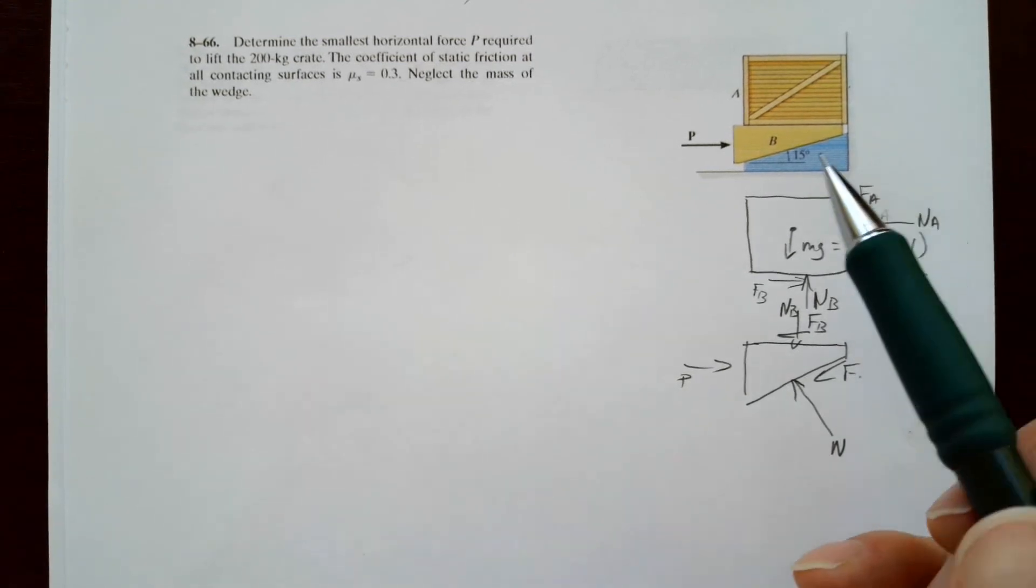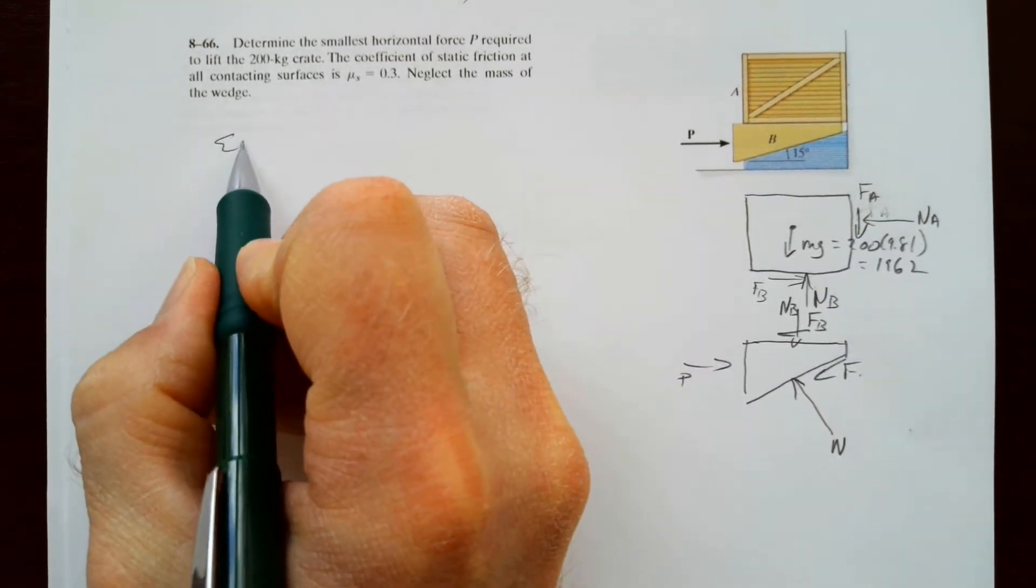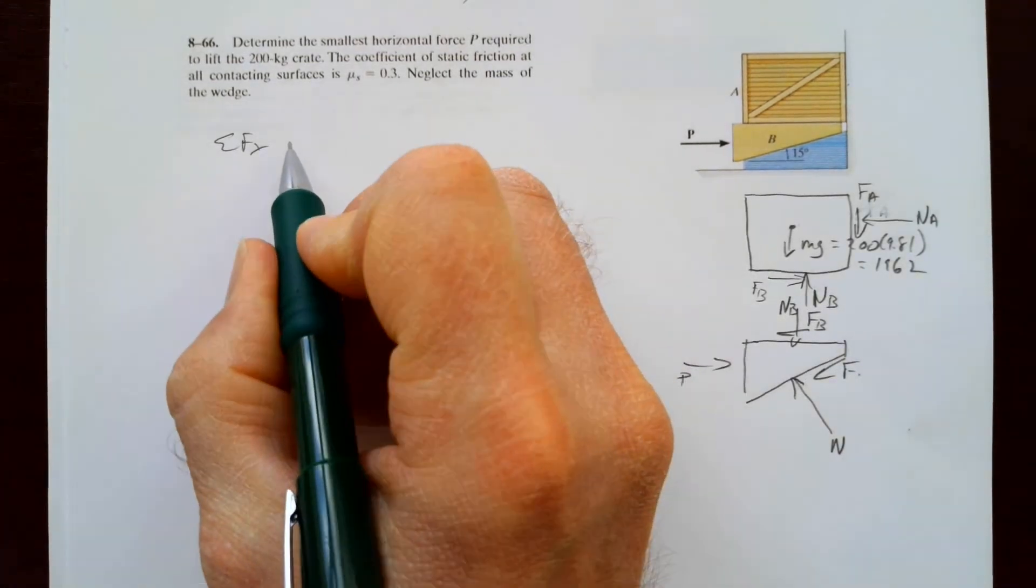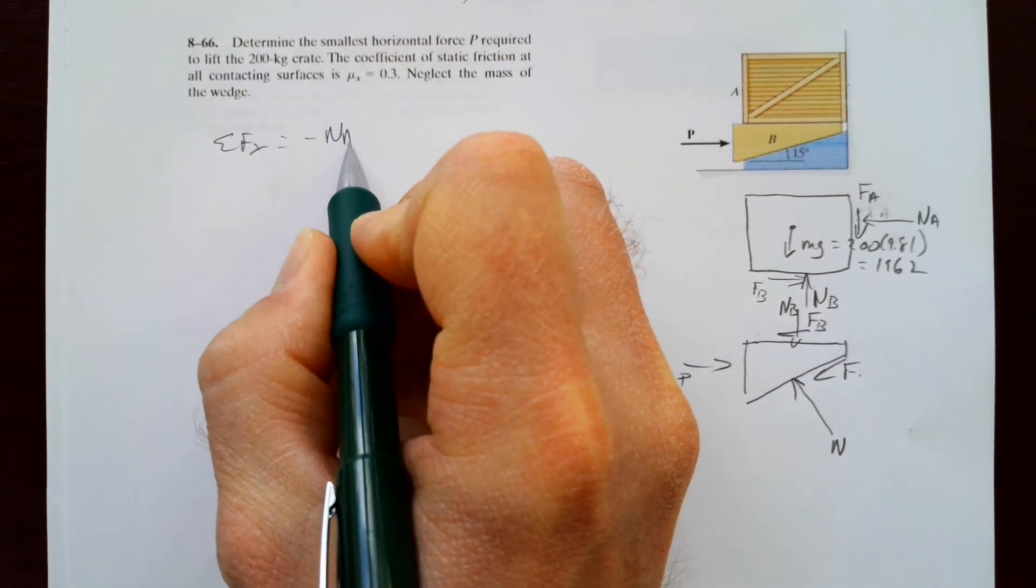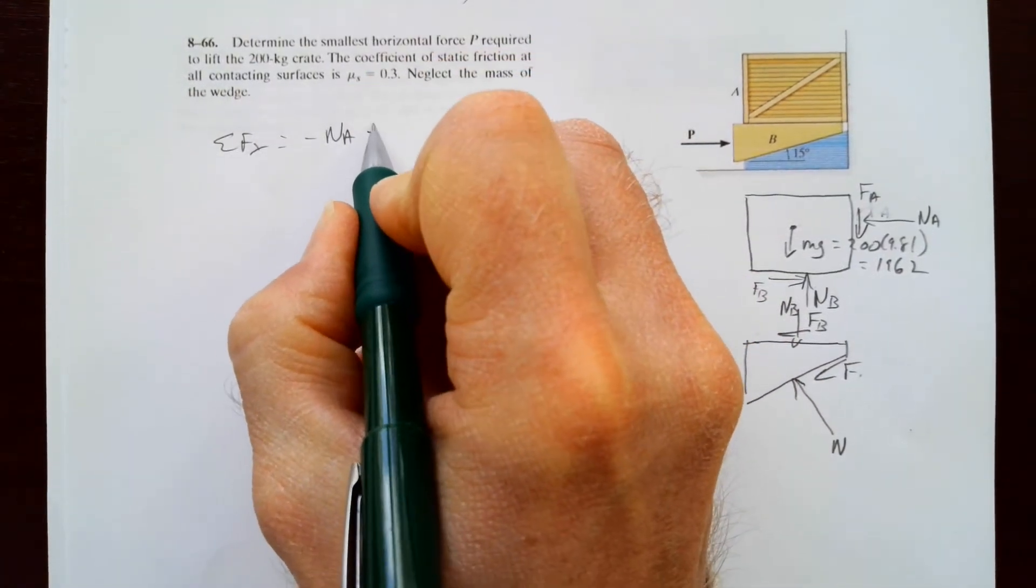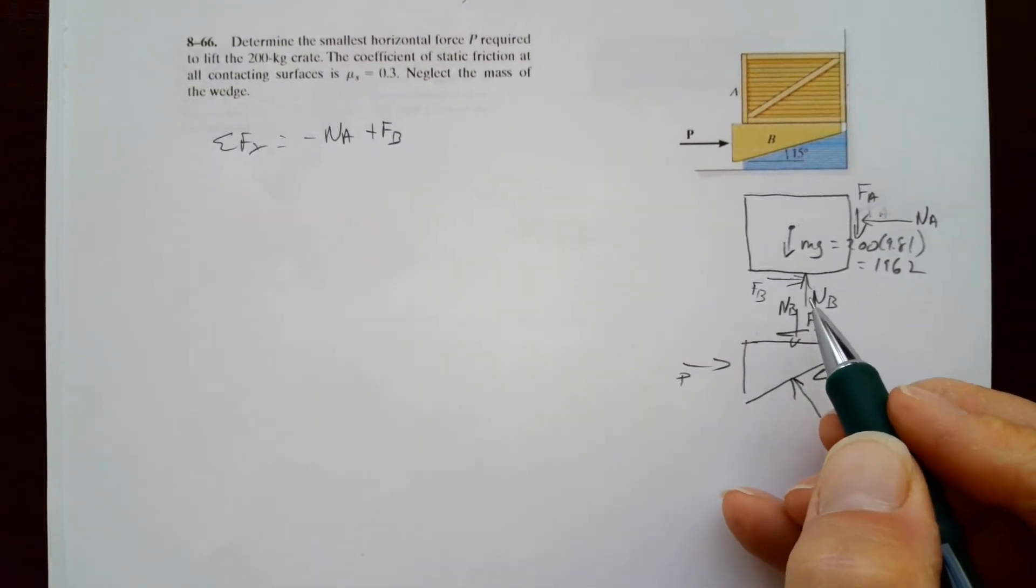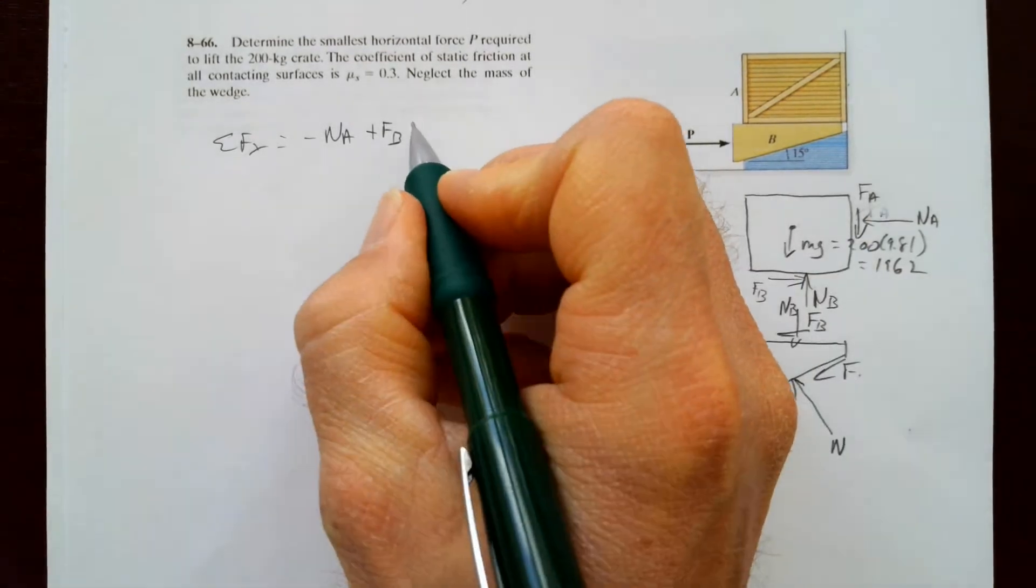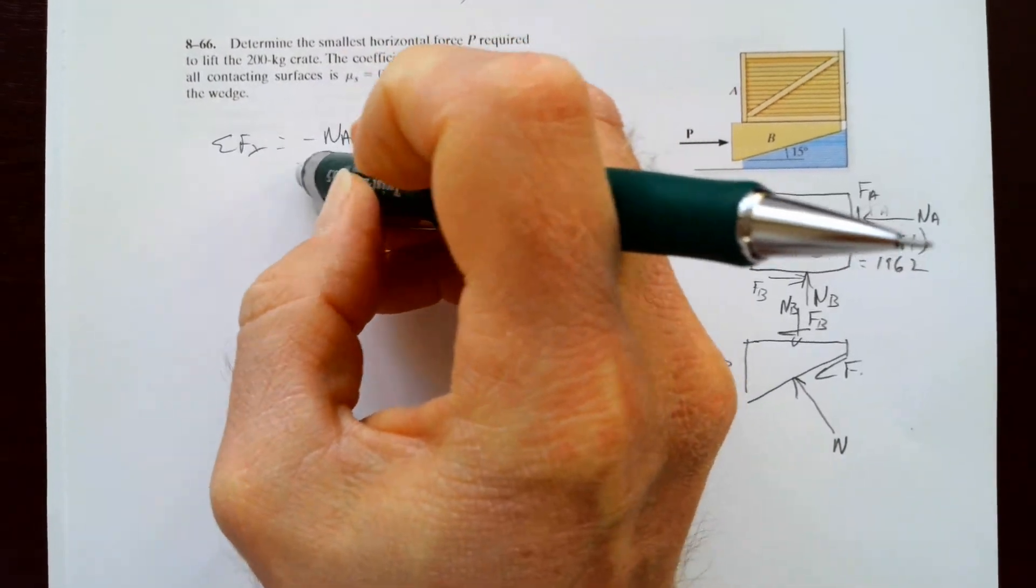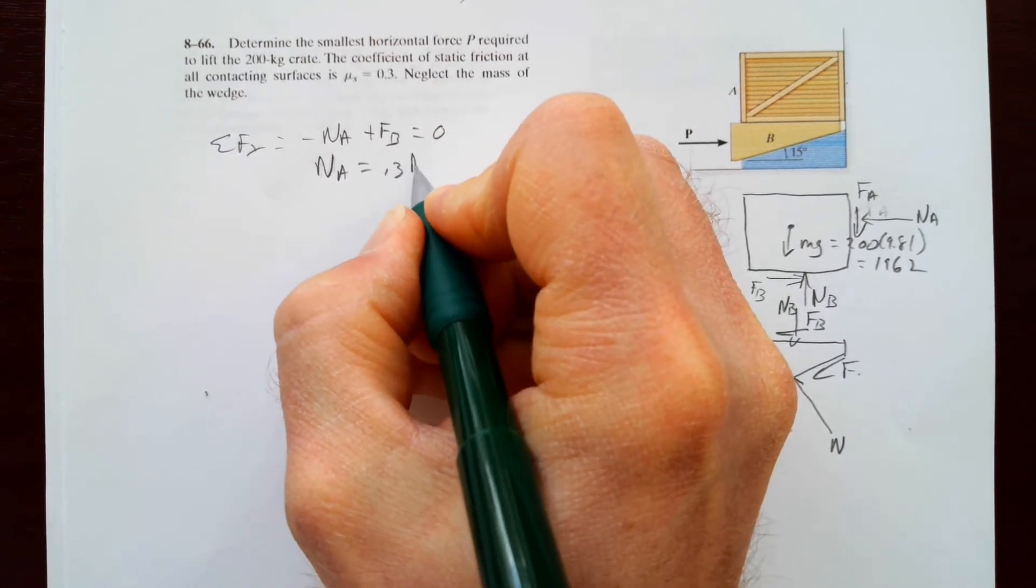So let's start by summing the forces on the crate. If we sum the forces in the x direction, we've got NA to the left, so negative NA. And we got FB to the right. Now, it's slipping at B, so FB is equal to 0.3NB. So NA is equal to 0.3NB.